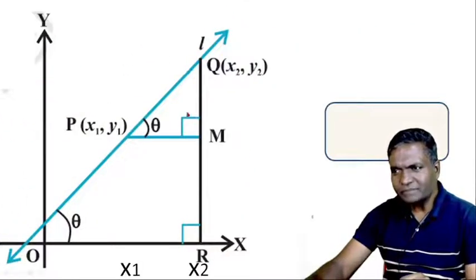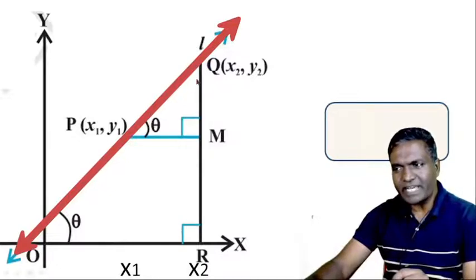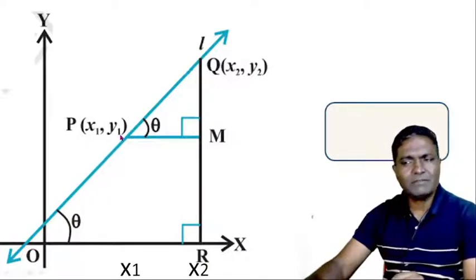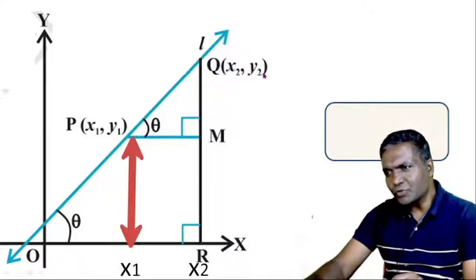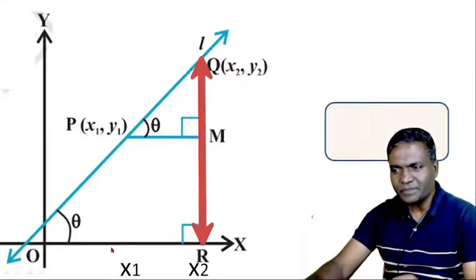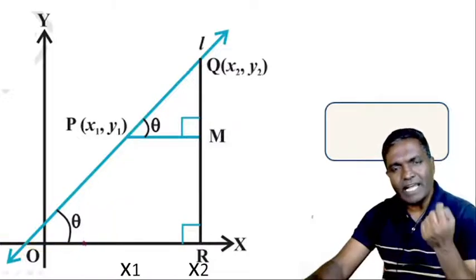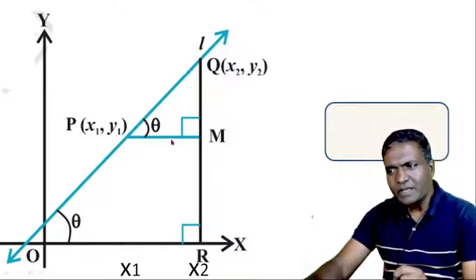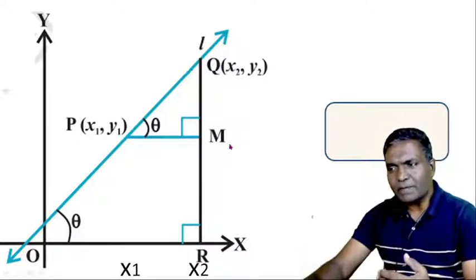This is the line L passing through two points P and Q. Point P has coordinates x1, y1 — drop perpendiculars from P to the axes so x1 is along the x-axis and y1 along the y-axis. Similarly, point Q has coordinates x2, y2. Along the x-axis x2, and along y-axis y2. We know the slope is tan(theta). Since we don't know theta directly, we draw PM perpendicular to QR.